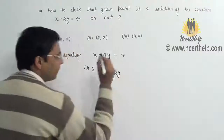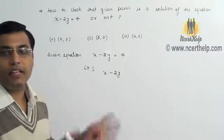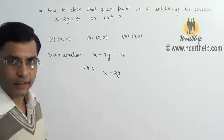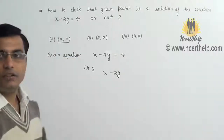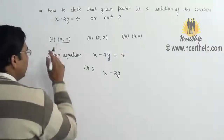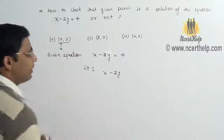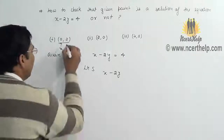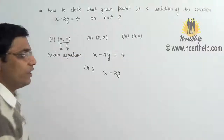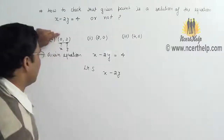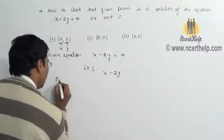Now plug the values of X and Y given in the solution set. The first solution is 0 comma 2. In this solution set, 0 is the value of X and 2 represents the value of Y. So I can plug X equals 0 and Y equals 2.